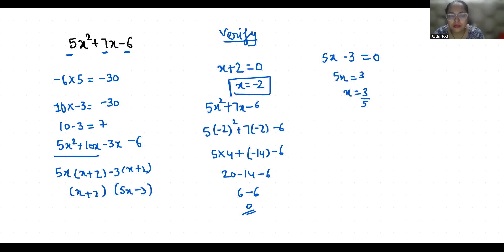Now 5 times 3 by 5 squared plus 7 times 3 by 5 minus 6. So 5 times 9 by 25 plus 21 by 5 minus 6. That is 45 by 25 plus 21 by 5 minus 6. So I am going to multiply by 5 here.